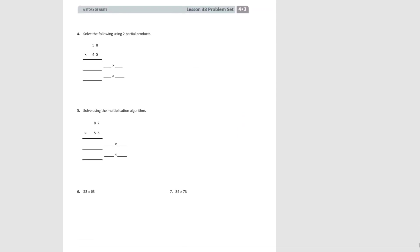Moving on to number 4. Now we're taking away the area model, but you can still think about it. We're going to look at the two partial products: first 5 times 58, second 40 times 58. Starting with the first one: 8 times 5 is 40, and 5 times 5 is 25, plus 4 is 29. Then for our second partial product, we're multiplying by tens, so we don't have any 1s. 4 tens times 8 would be 32. Then 5 times 4 is 20, plus 3 is 23. When we add them together, we get 2,610.